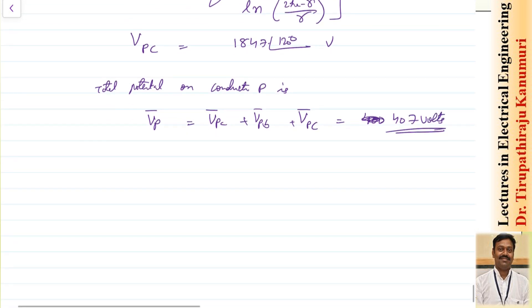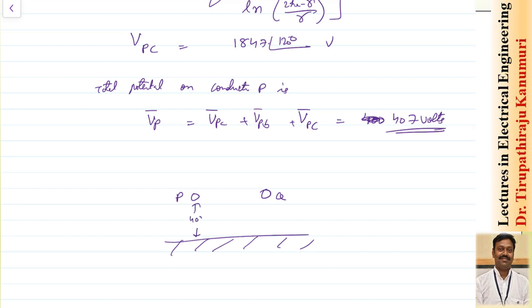The voltage is not nullified — 407 volts appears on the communication line conductor P with respect to ground. Similarly, some voltage V_Q appears on conductor Q. While the potential difference V_P minus V_Q between the two conductors may be manageable, each conductor is raised above ground potential. If a person touches conductor P they will experience a shock. So proper insulation must be provided to withstand this voltage, and transposition measures must be taken to nullify it — as discussed earlier.